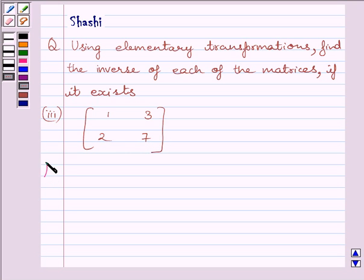Let us now start with the solution. First of all, let us assume A is equal to the matrix given in the question, that is [1, 3; 2, 7].